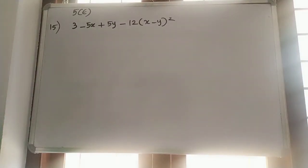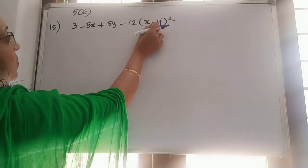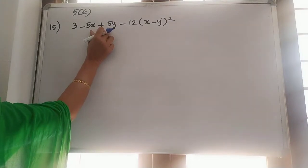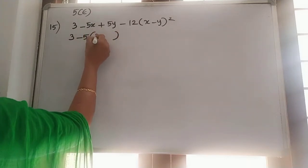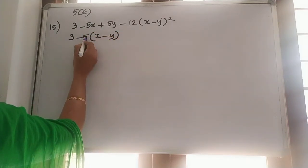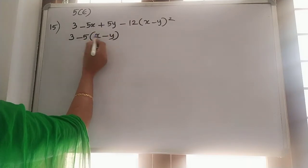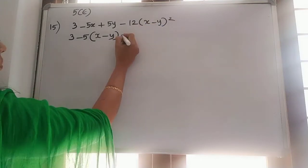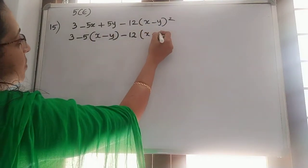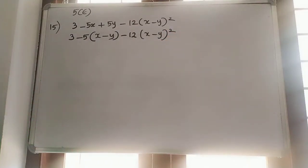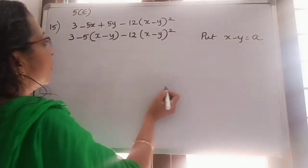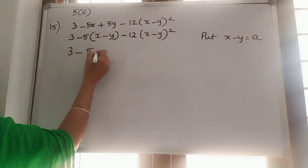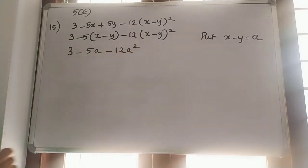15th one: 3 minus 5(x minus y) minus 12(x minus y) squared. So x minus y is here. From here we can take 5 common, then it will be x minus y. If we take negative 5, within brackets we will get x minus 1 — then only we get minus 5 into x as minus 5x and minus 1 into minus as plus 5y. We have x minus y here, so take negative 5 common. Put x minus y as a, and we can write this as 3 minus 5a minus 12a square.